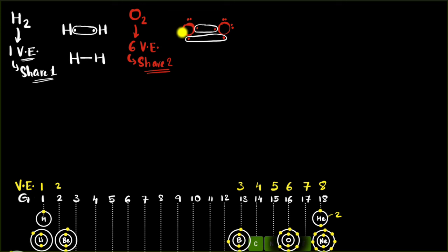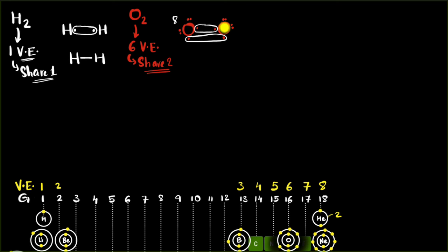Because of this covalent bond, we can count the electrons each oxygen has access to. Each oxygen atom has access to eight electrons, so the octet rule is satisfied for both atoms.